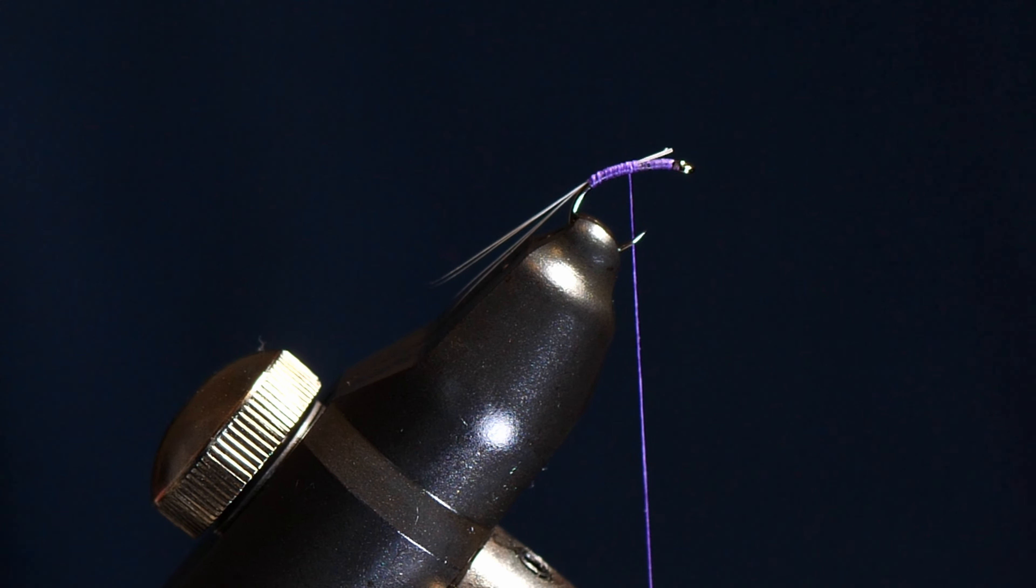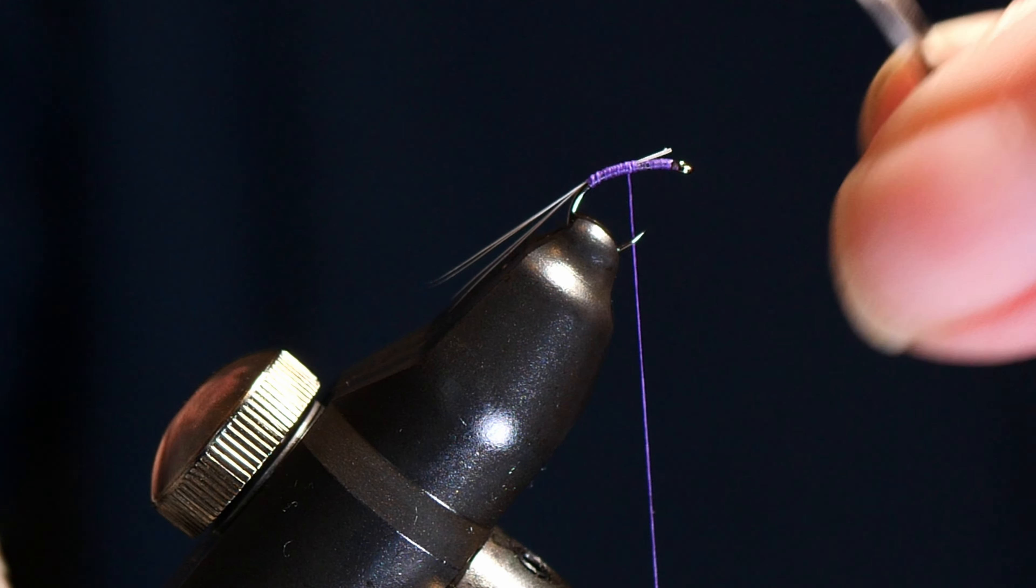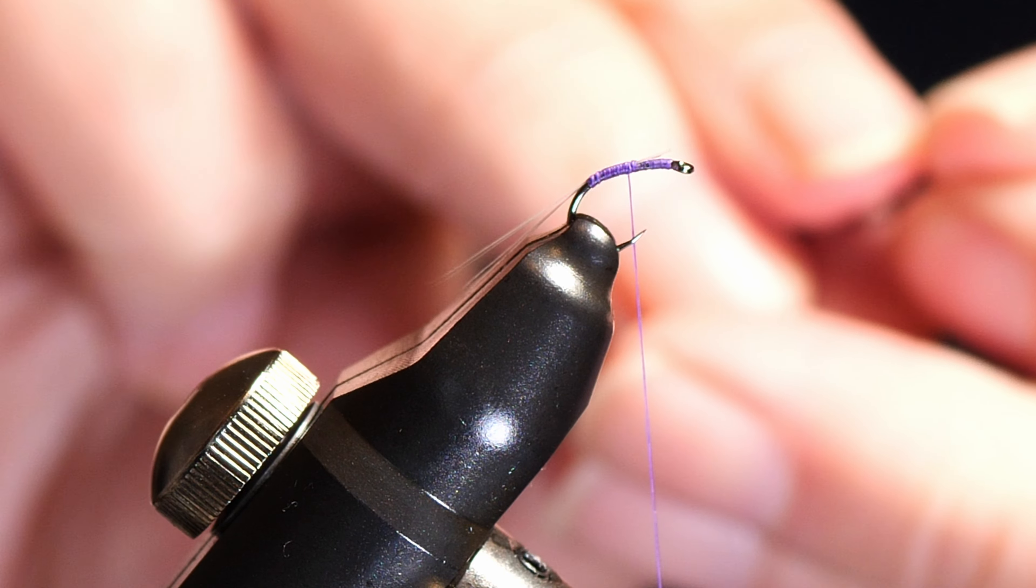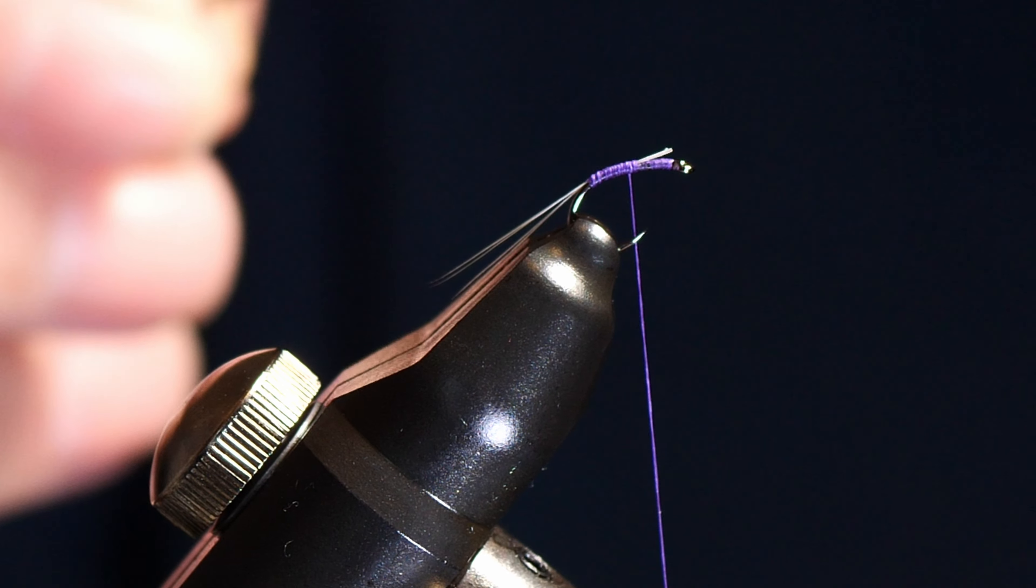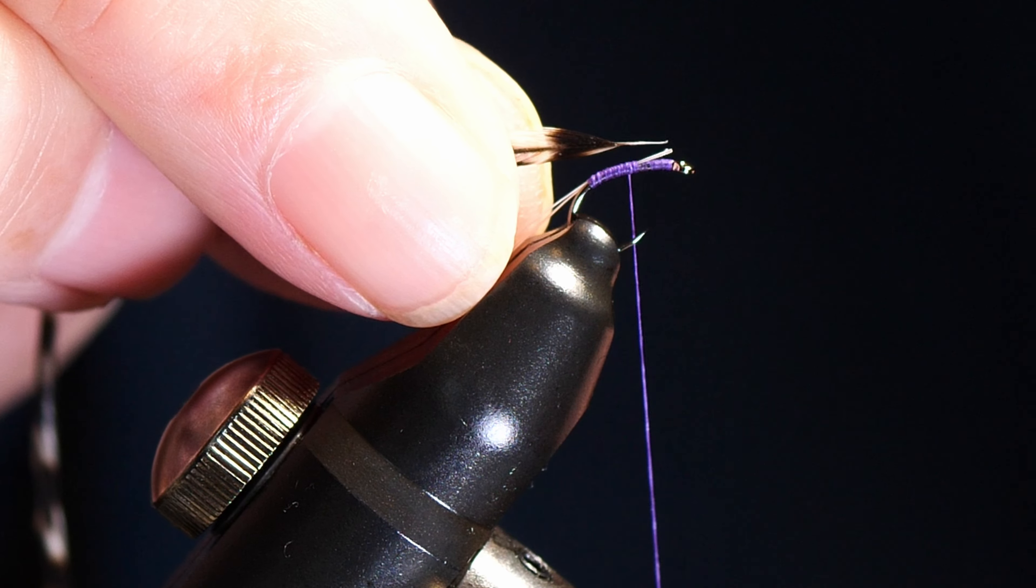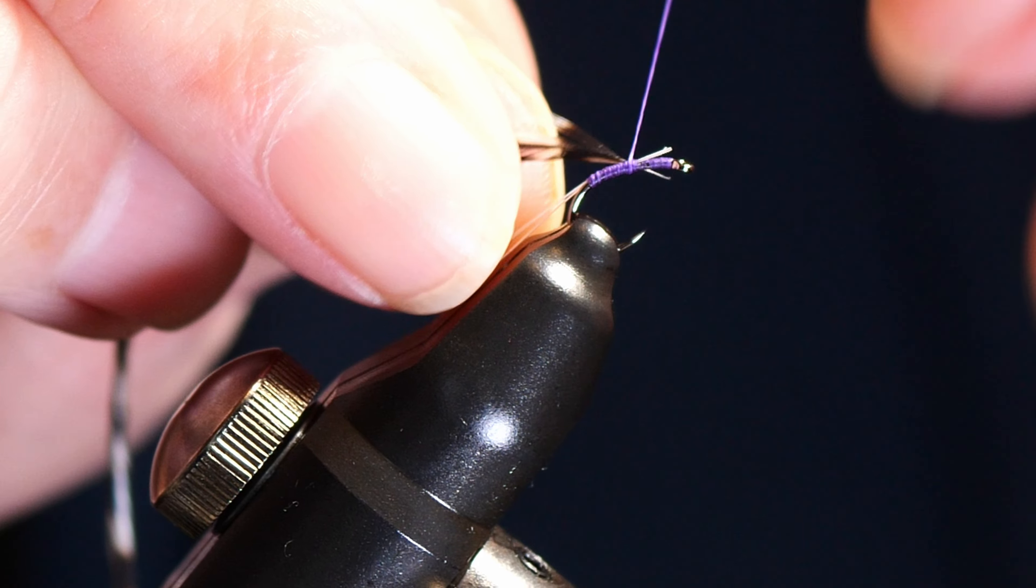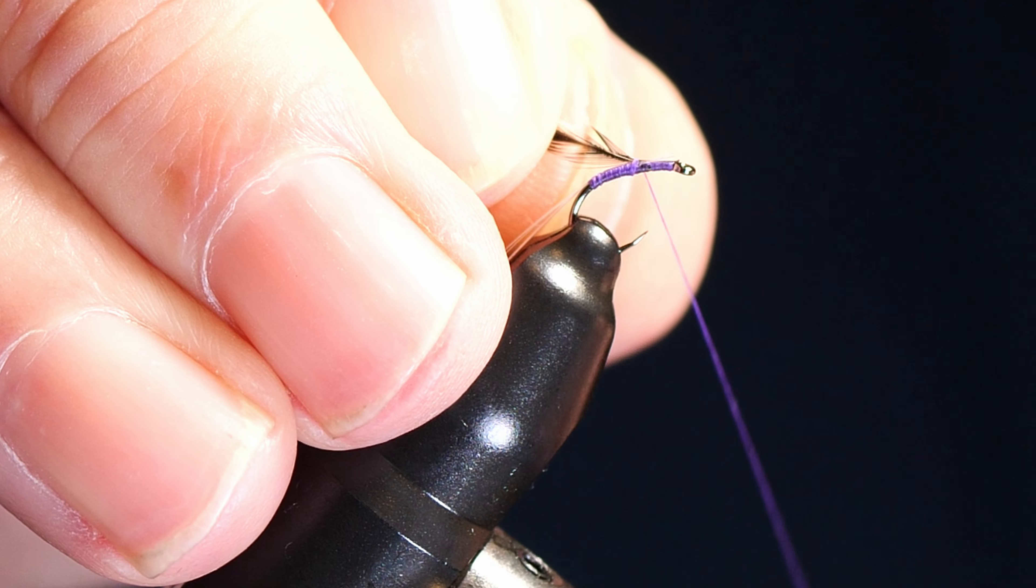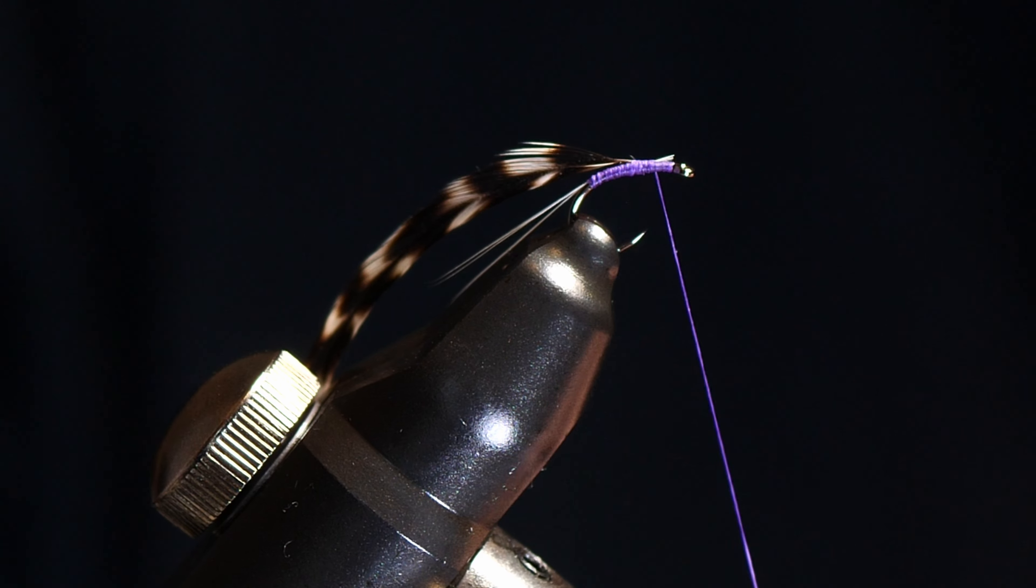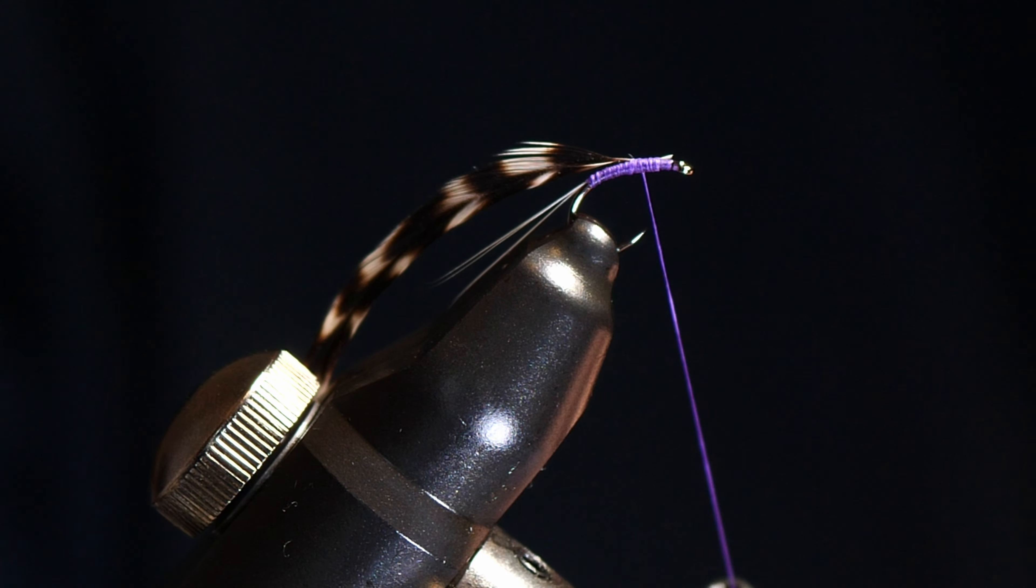So I've got one of these Whiting's genetic saddle feathers in grizzle. Now the full capes are quite expensive, ranging anything from £70 to £150. You don't have to buy the full cape, you can get a packet with just a few feathers for around about £20 and that will do the job quite nicely because you can do a few flies with one feather.